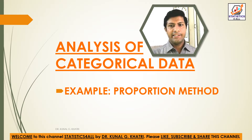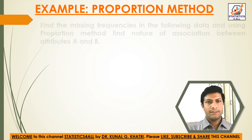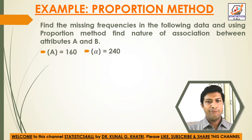Analysis of Categorical Data: Proportion Method. Now let's start an example of the Proportion Method. Find the missing frequencies in the following data and, using the Proportion Method, find the nature of association between attributes A and B. The data given is: A = 160, alpha = 240, B = 160, AB = 40.